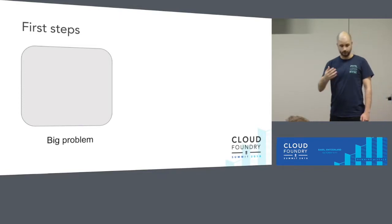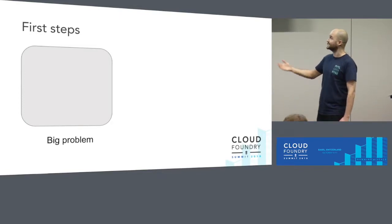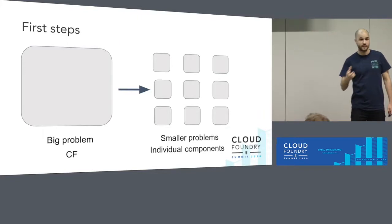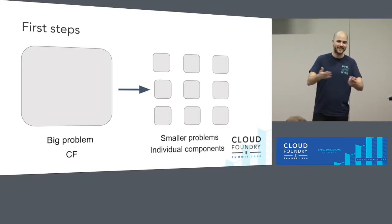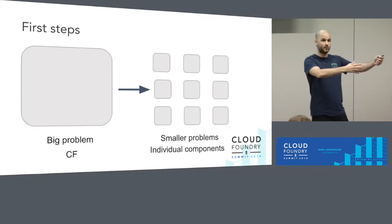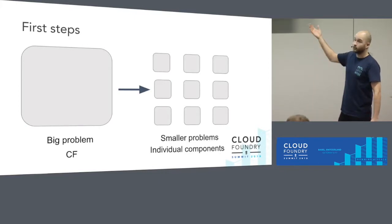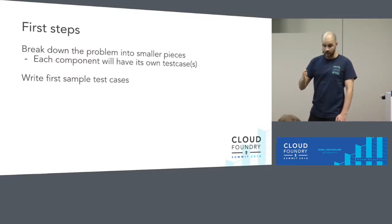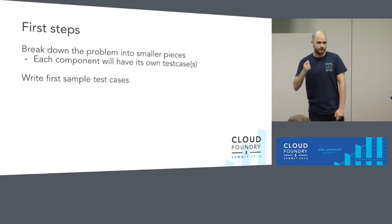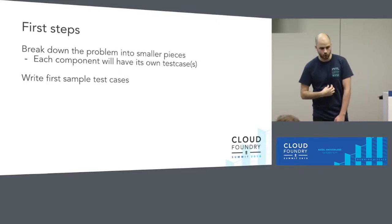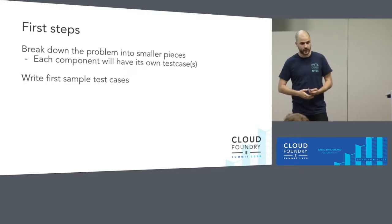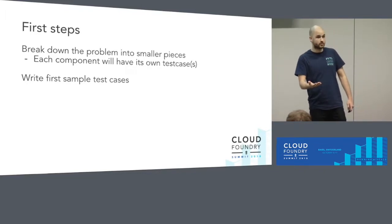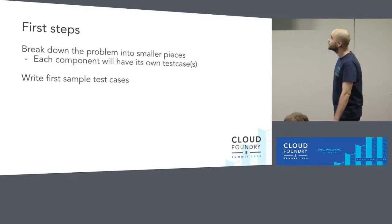We have a big box, and this big box is our big problem. The first step: let's break it down into smaller problems. We have the big problem called CF, and the smaller problems can be worked as individual components. We got inspired by how Cloud Foundry itself is distributed — individual teams working with individual components independently, then coming together as a whole system. So we said, let's break our big problem into smaller problems. Each component should have its own test case, with some first sample test cases. At this point the sample is very important because we're in a discovery process — trying to figure out how to test-drive a component without knowing exactly what it means for a component to be properly restored, unlike the teams who actually develop it.